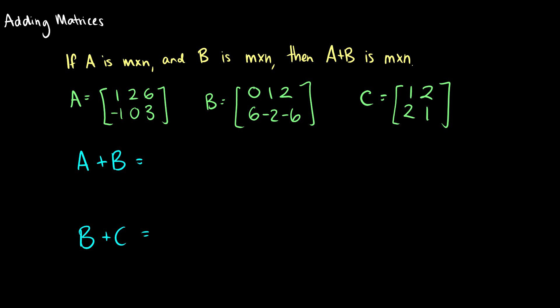Okay, so adding matrices. If two matrices are the same size then you can add them together. So if A is m by n and B is m by n, then A plus B will be the same size. For instance, A plus B, where A is a 2 by 3 matrix and B is a 2 by 3 matrix, our result will be 2 by 3.